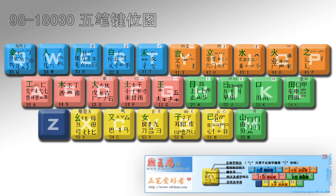Many characters have more than one representation, sometimes for ease of use when there is more than one obvious way to break down a character. More often, it is because certain characters have a short representation of less than four letters, as well as a full representation. For characters with fewer than four components that do not have a short form, one types each component and then fills up the representation by manually typing the strokes of the last component in the order they would be written. If there are too many strokes, one should write as many as possible but put the last stroke last, mirroring the component rule for characters with more than four components.